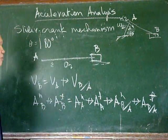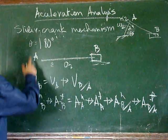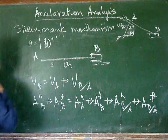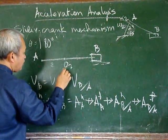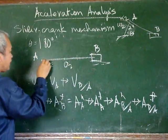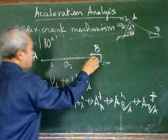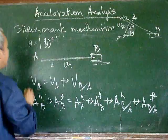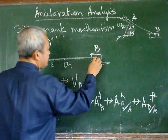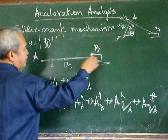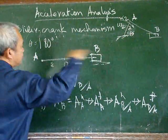Our slider-crank mechanism is at this position this time, with theta equal to 100 degrees, with our crank O2 at this point, and our crank here. The connecting rod is also horizontal, point A is here, and point B — the slider — is towards the right, as it moves along the horizontal also.